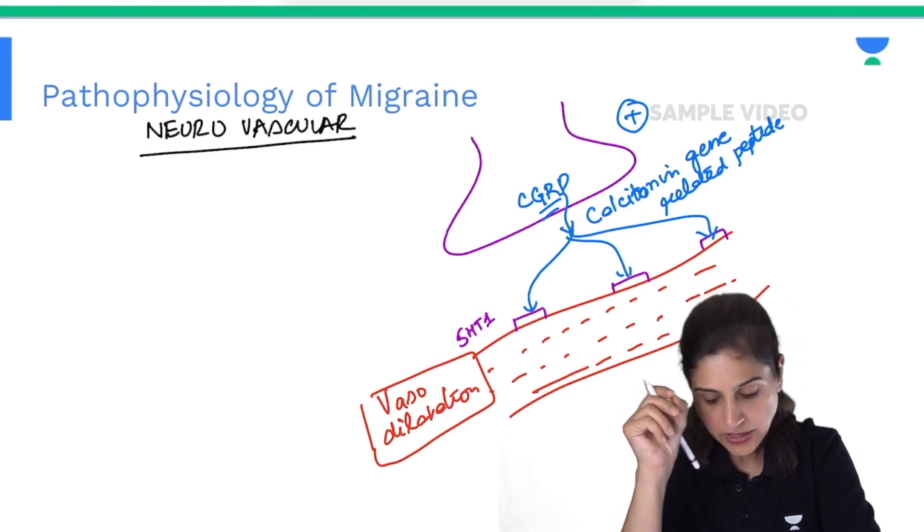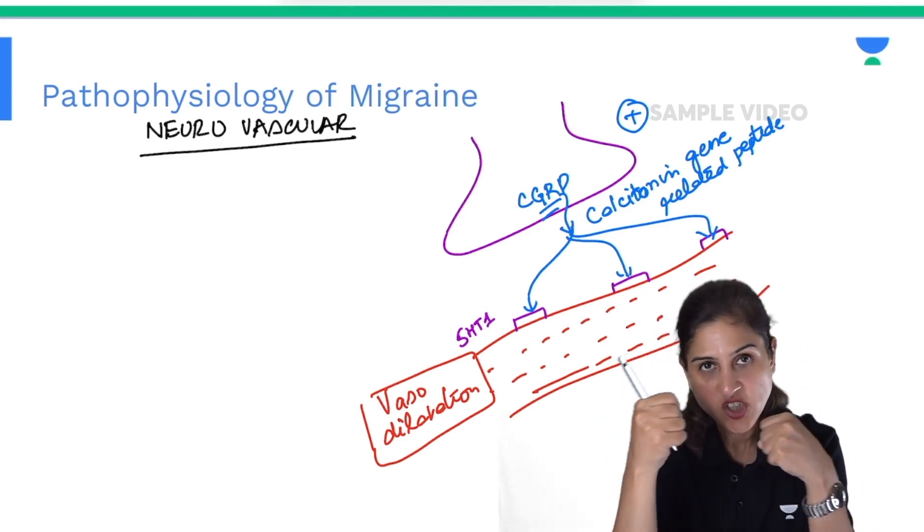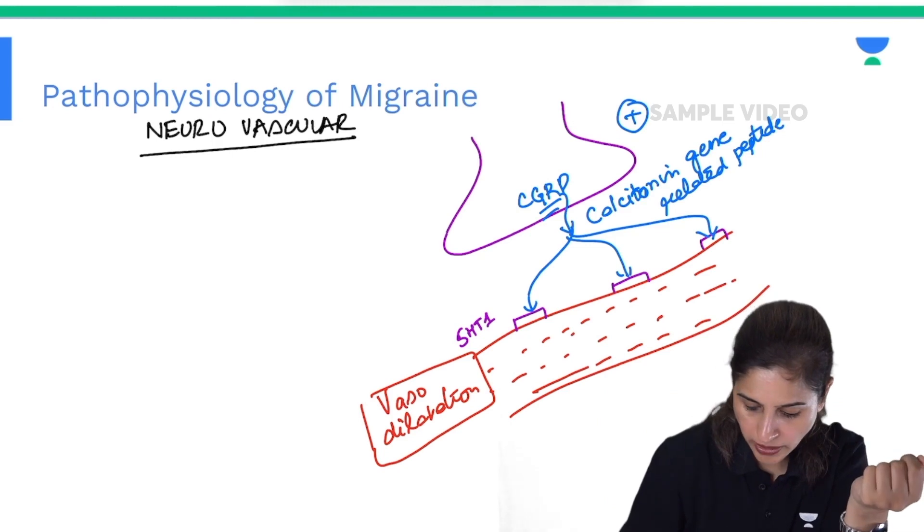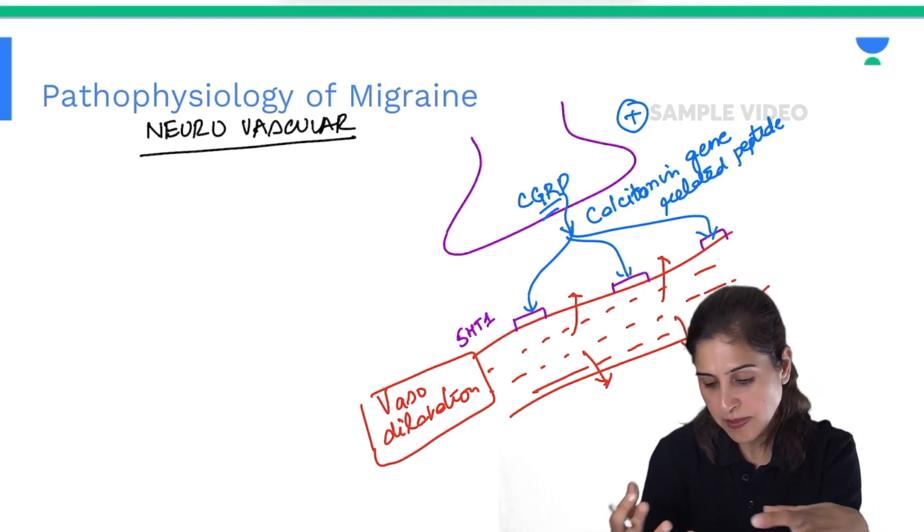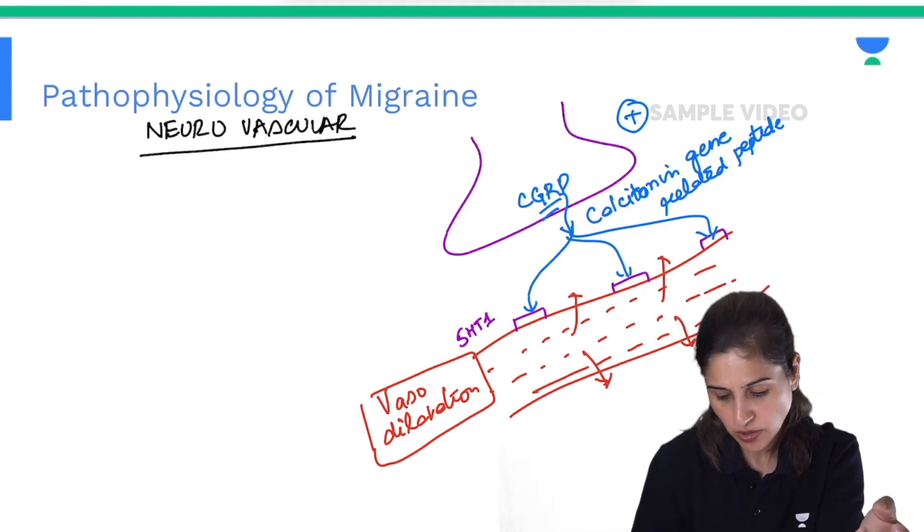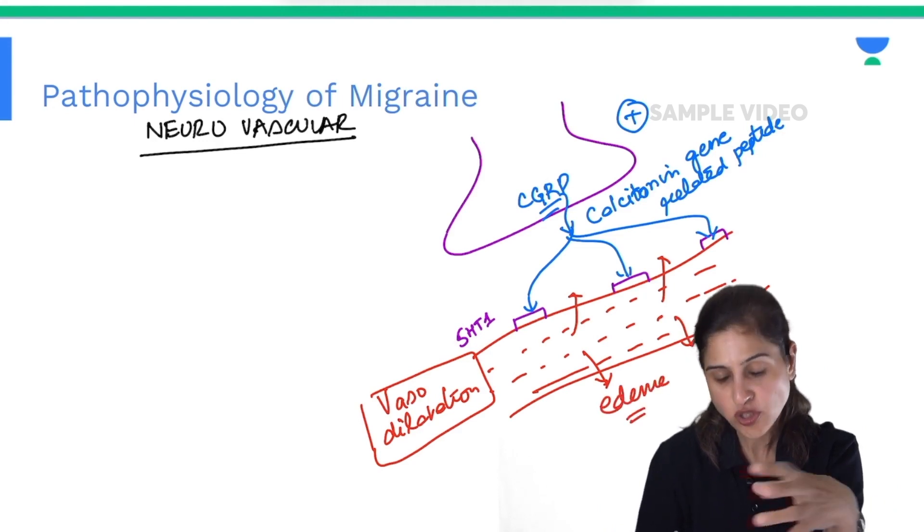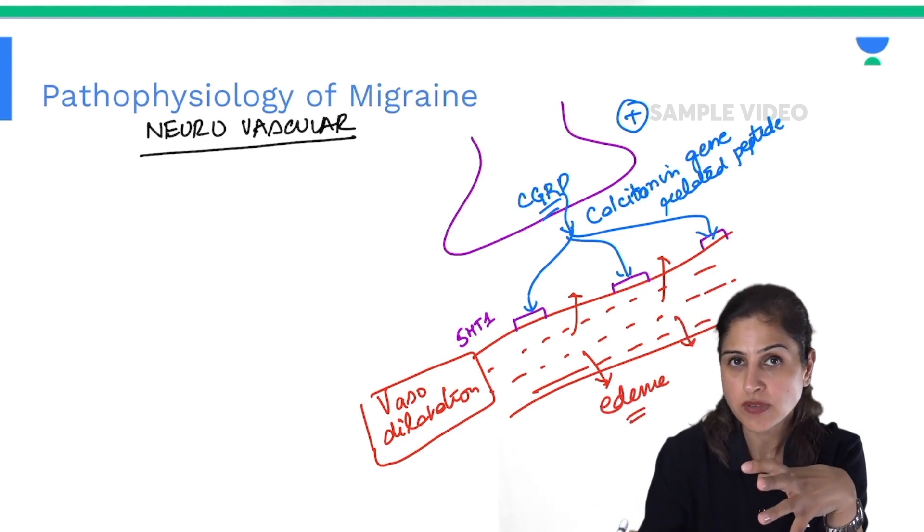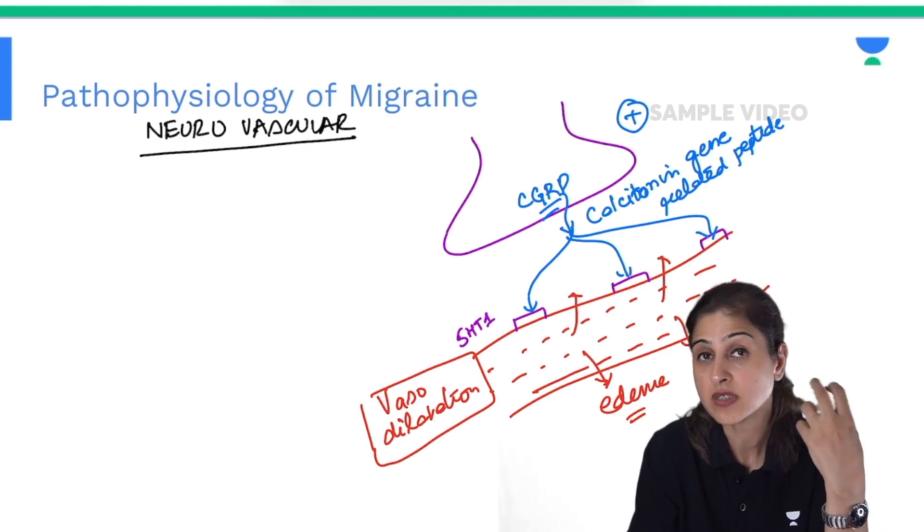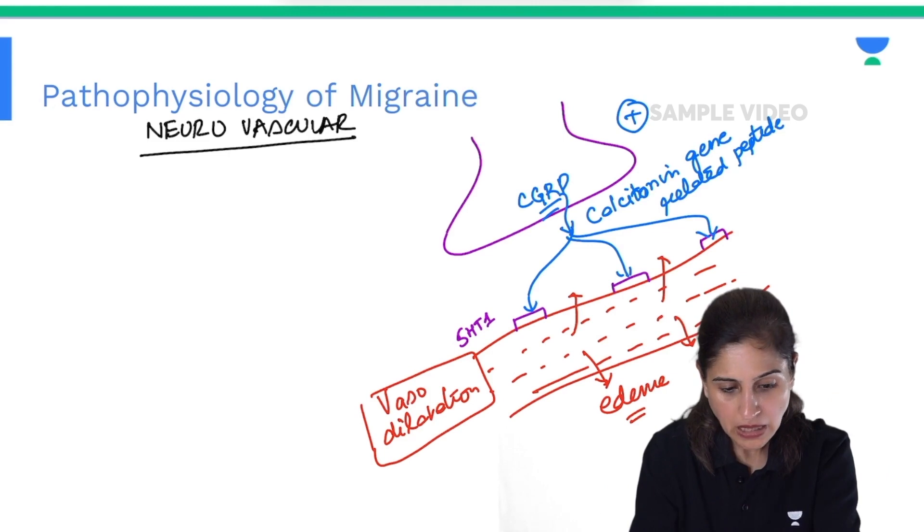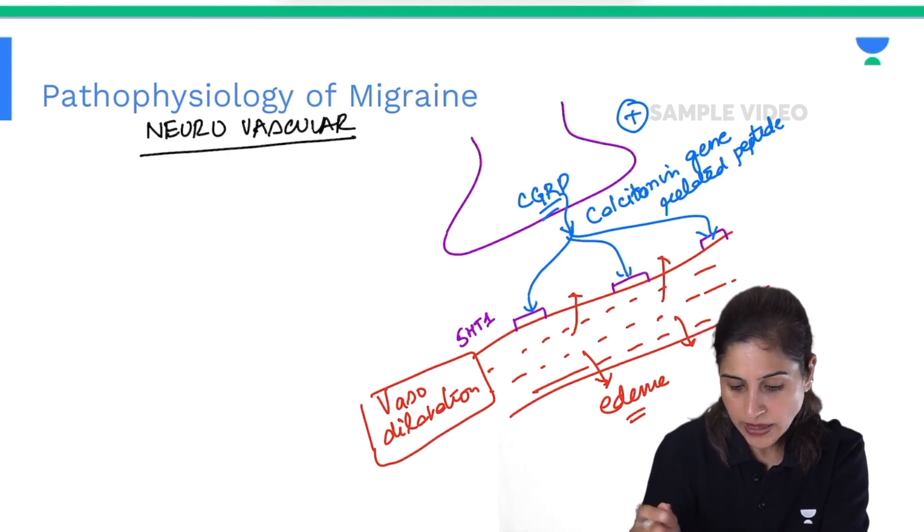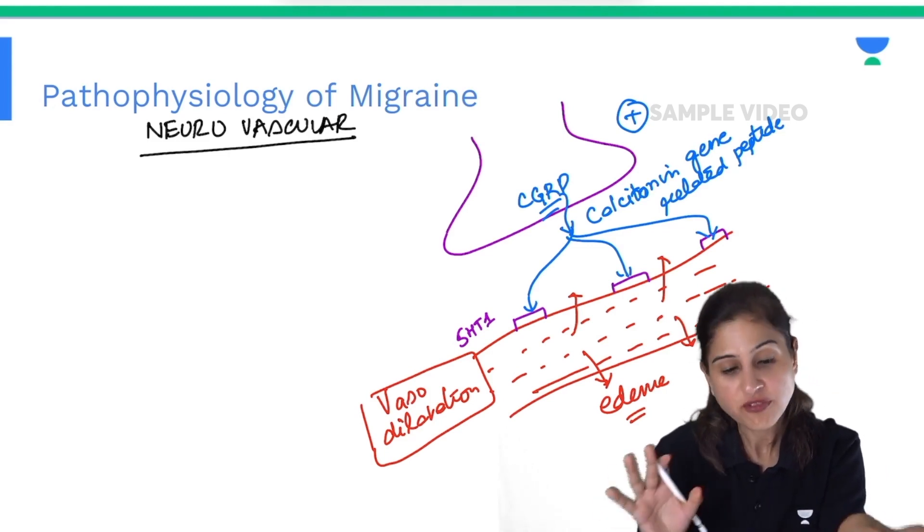As this vasodilation occurs, when something is stretched, it leads to leaking of plasma to the surroundings, which we call edema. This edema presses on the nerves and the patient experiences excruciating pain, the throbbing pulsatile pain. This is what happens in the pathophysiology of migraine.